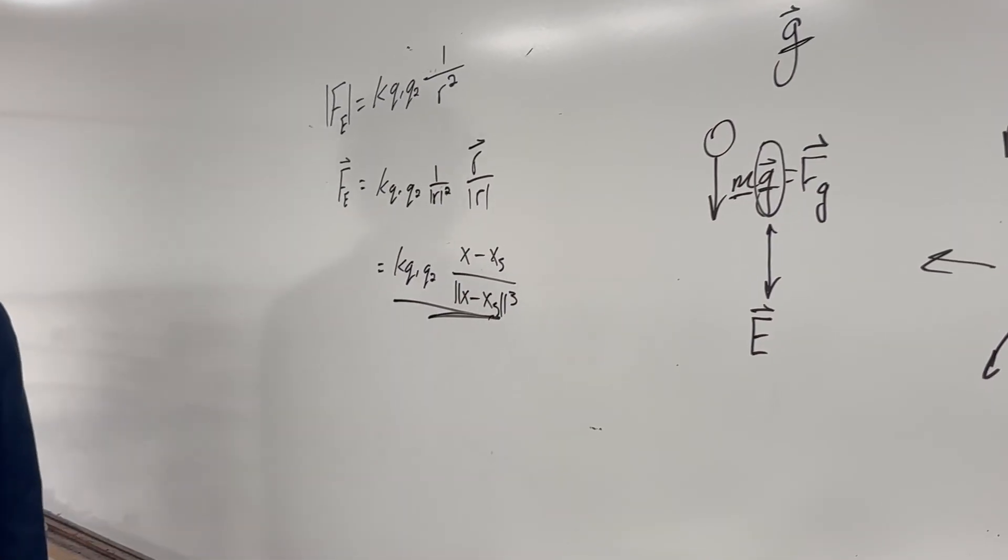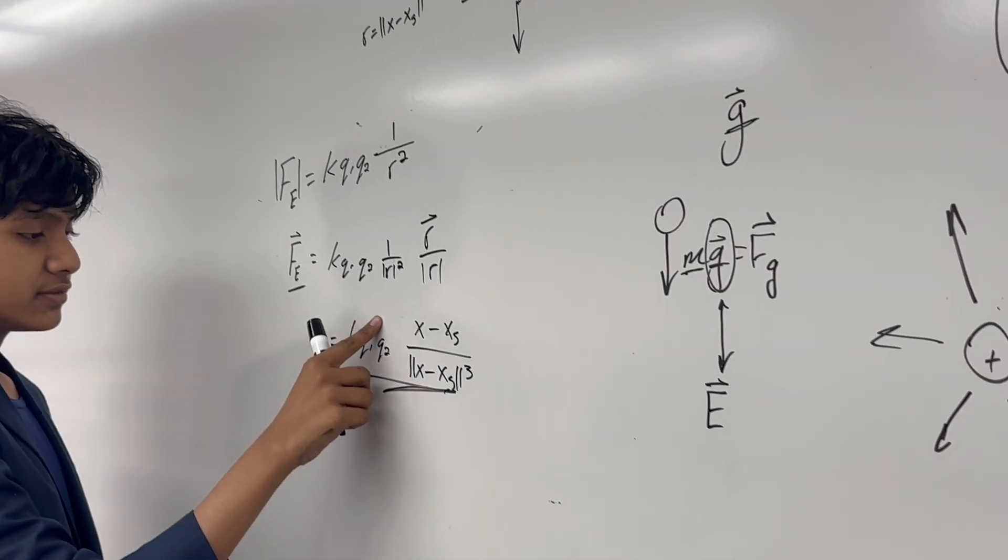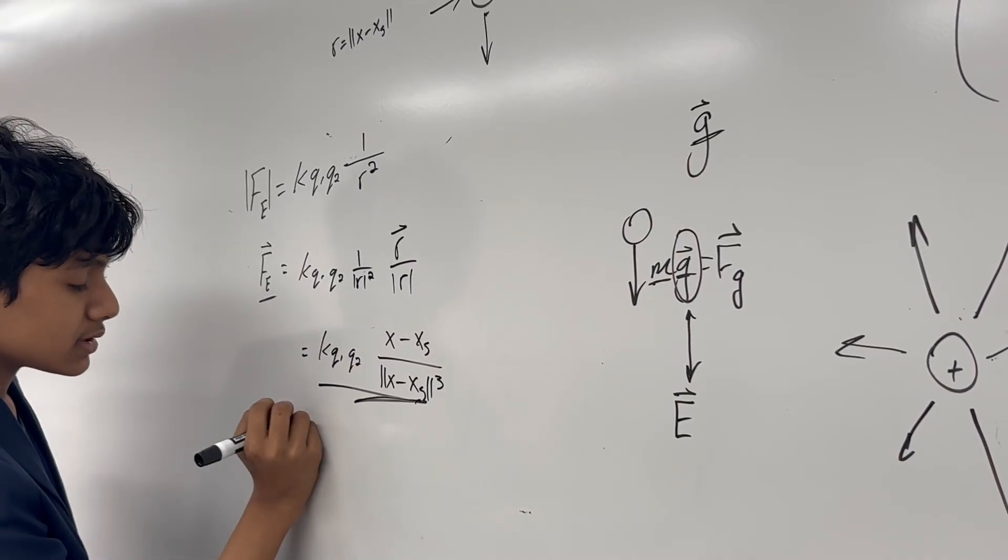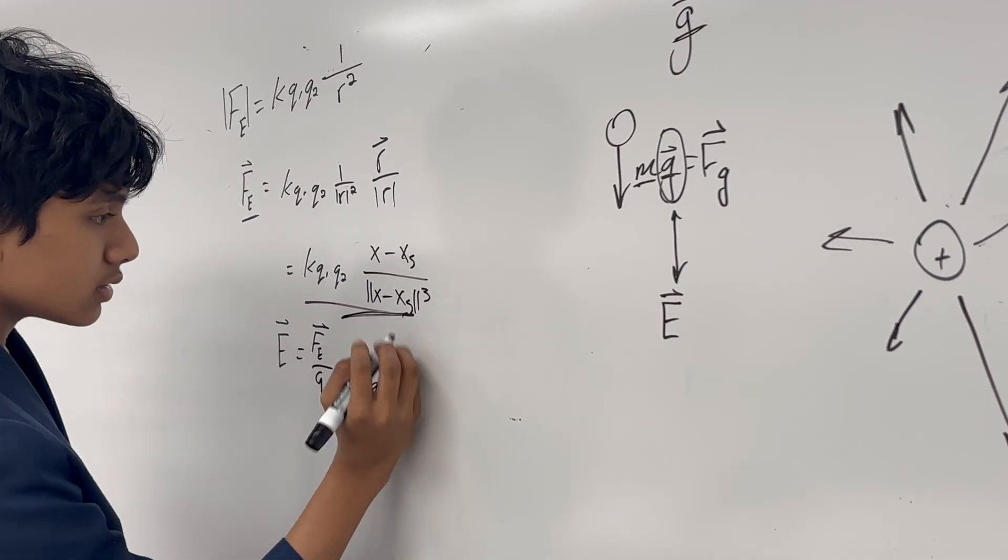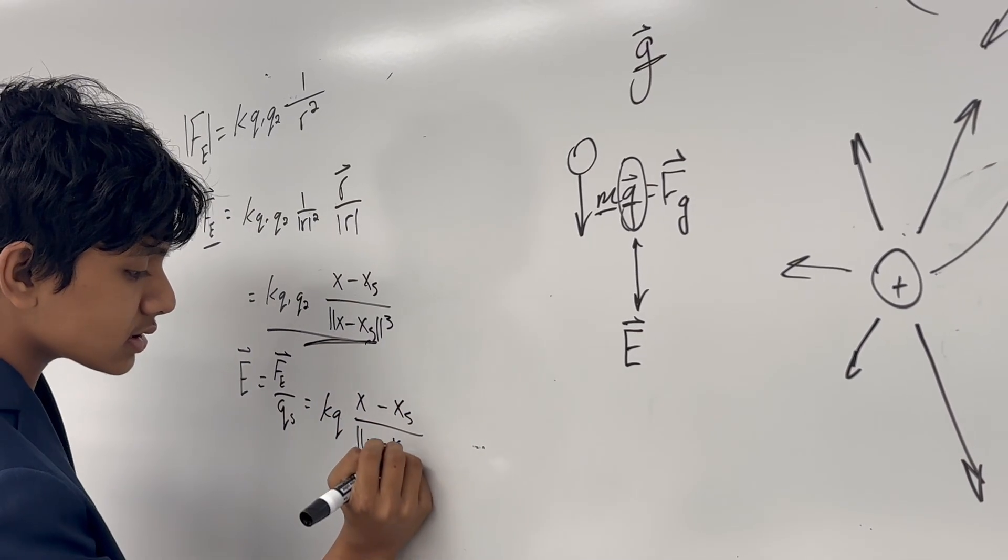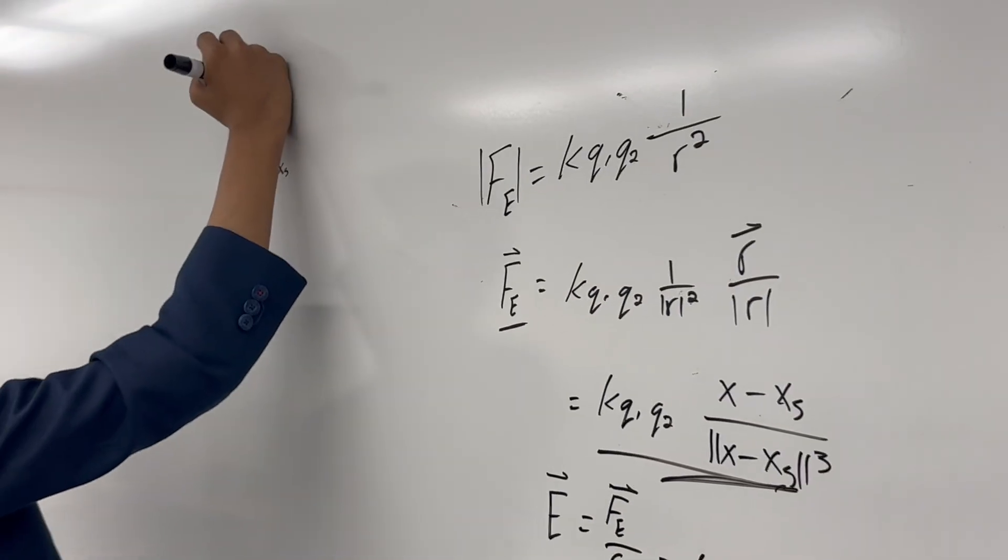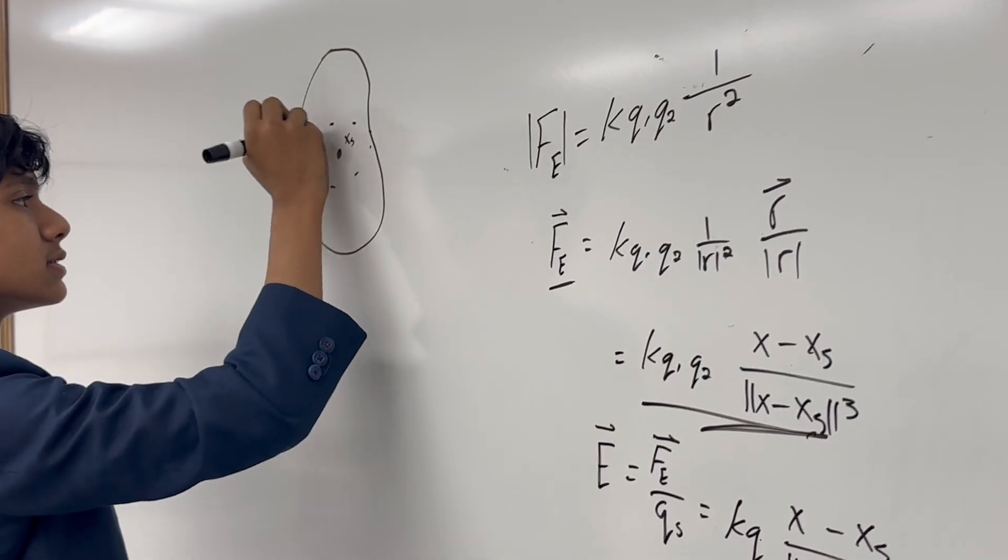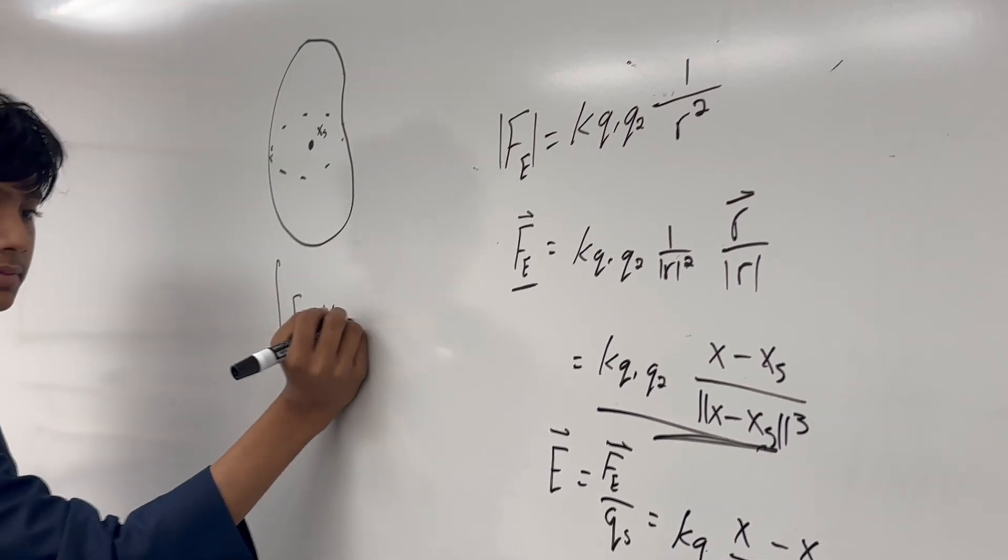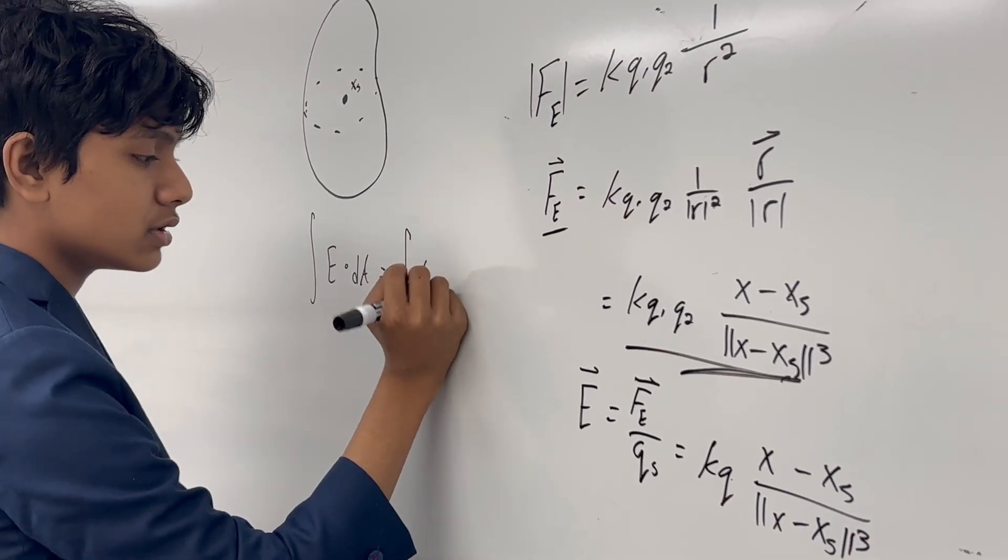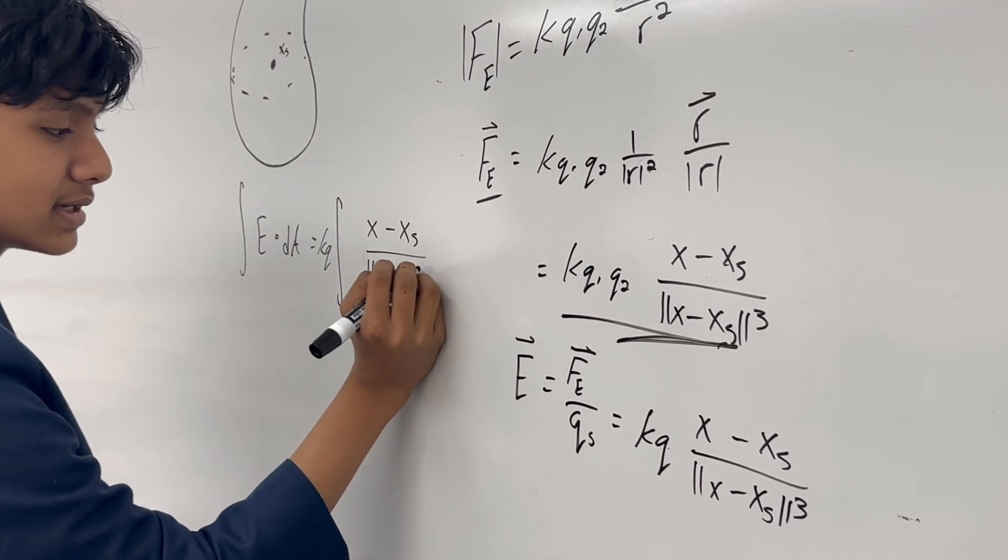So as you can see, we can rewrite this as KQ1Q2R over magnitude of R cubed. And we can further rewrite that as X minus XS over magnitude of X minus XS cubed. And now, we have a real expression for the electric force. And so, what is the electric field in this state? Well, if Q1... the electric field is just the electric force divided by the charge of the source. So you can write that as KQ X minus XS over X minus XS cubed. So now, if you have a source point right over here and you have some closed surface surrounding this point, then it looks like E dot dA is going to be equal to the integral of KQ, well both of those are constants, X minus XS over the magnitude of X minus XS cubed dA.